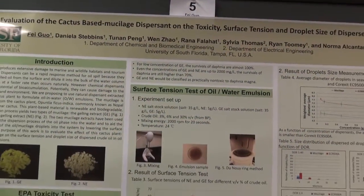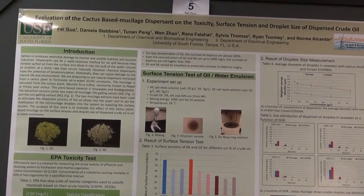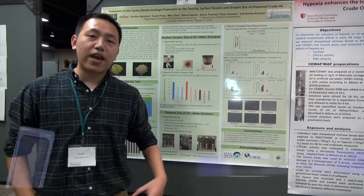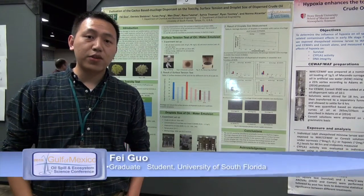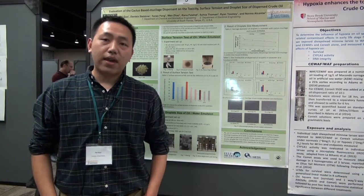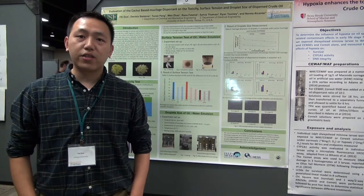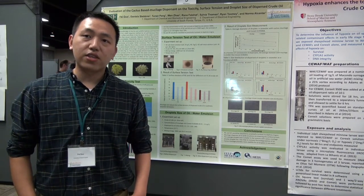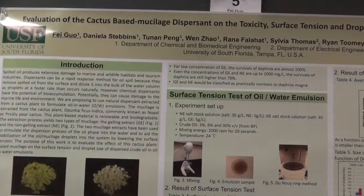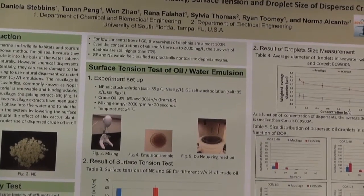I'm a PhD student from University of South Florida, and this is my project. For this project, we are using the cactus mucilage as a dispersant for the spilled oil. With this cactus mucilage, we tested the surface tension, and also we tested the toxicity, and also the droplet size of the dispersed oil. That's what we did in this project.